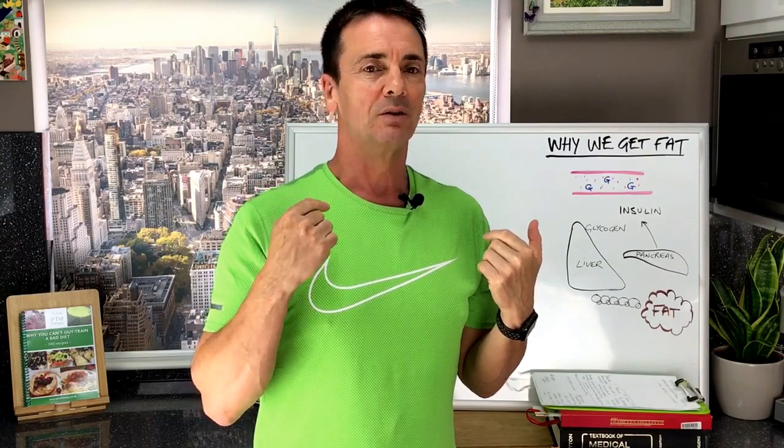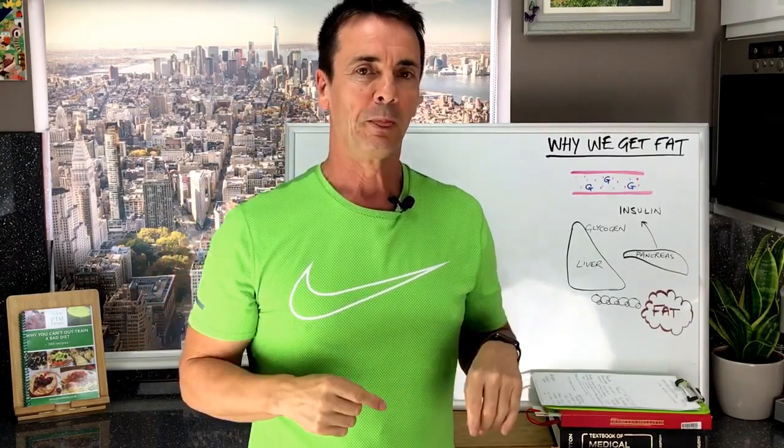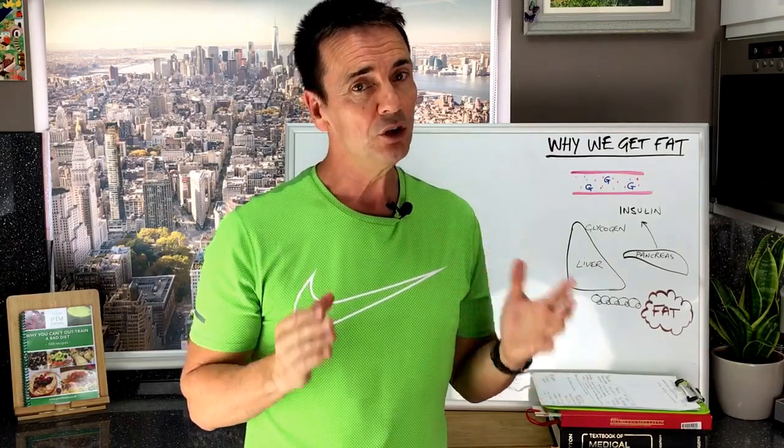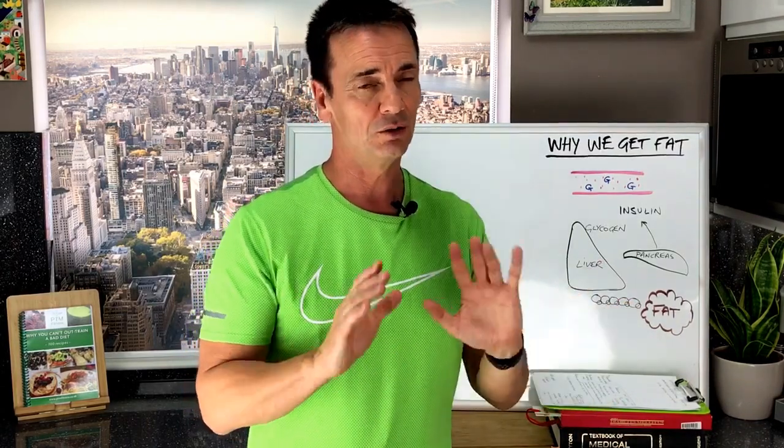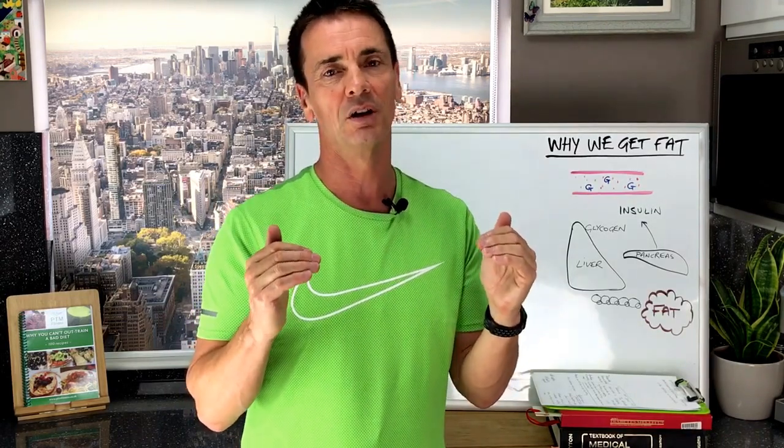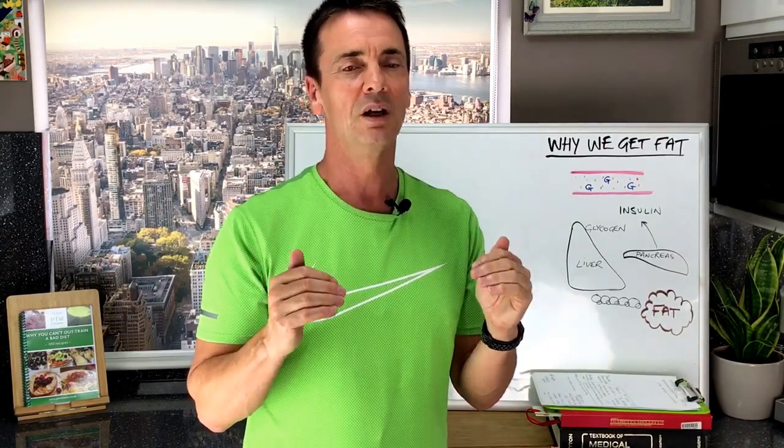Your bloodstream has a certain amount of blood sugar — or blood glucose as most people call it — that gives you energy. When we eat, the amount of sugar and glucose in the blood goes up. This is toxic to the body; we don't want too much glucose or sugar. So the pancreas secretes a hormone called insulin, and insulin's job is to lower the blood glucose level in your bloodstream to make sure it is at a safe level. Insulin then shuttles that energy into your muscles for immediate use.